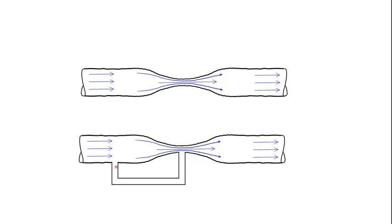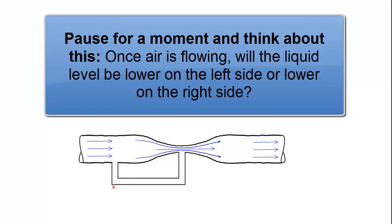Would you expect that the liquid level on the right side at the constriction is lower than the liquid level on the left side? Would you expect that the level on the left side is actually lower than that on the right side?